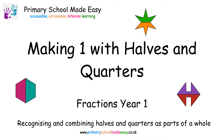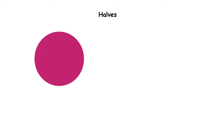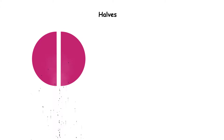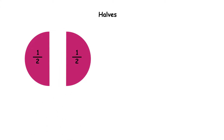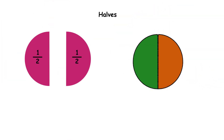Making one with halves and quarters. Here is a circle. If we cut it into two equal pieces, we cut it into two halves. If we want to make a whole circle, we need two halves. Two halves make one.